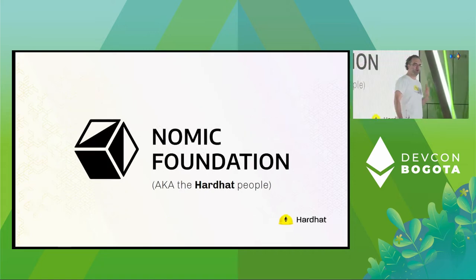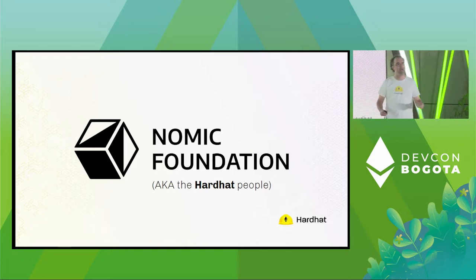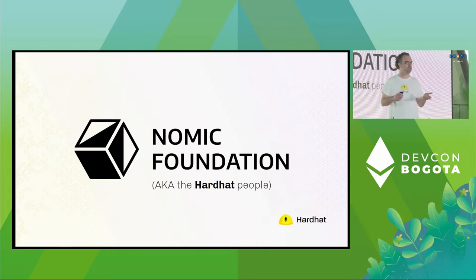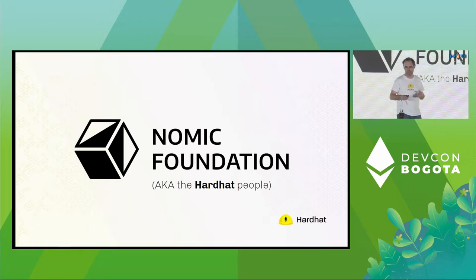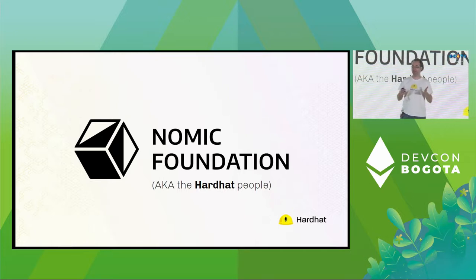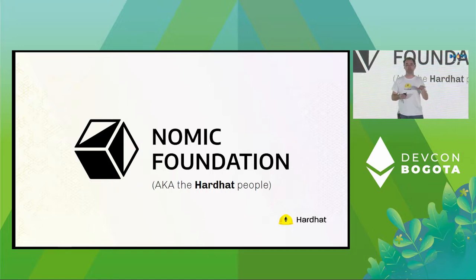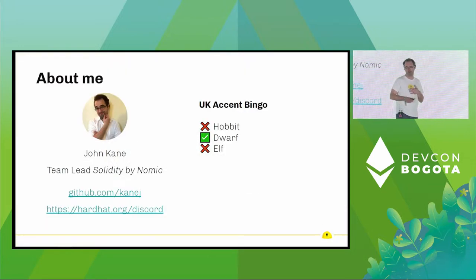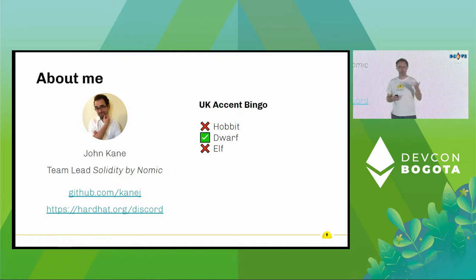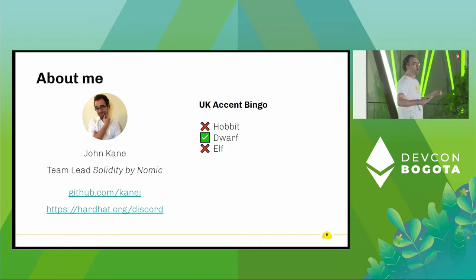My name's John Cain. I'm from the Nomic Foundation — you probably know us as the Hardhat people. Nomic is a not-for-profit foundation paid for by donations with a remit to improve the Ethereum developer experience. Hardhat's a big part of that, but the remit's general. We've identified a gap in editor tooling, and that's why we have built and released a VS Code extension called Solidity by Nomic Foundation, of which I'm the team lead.